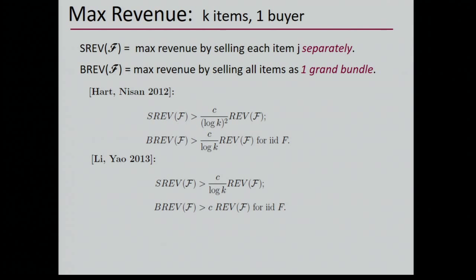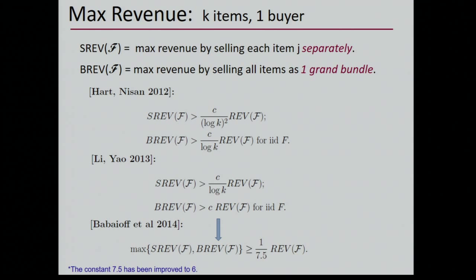However, this doesn't give an algorithm that obtains a constant factor for the general case. Finally, Bobaieff et al. proved a very elegant result showing that if you look at the maximum of selling separately and bundling, then it's off by at most a constant factor.